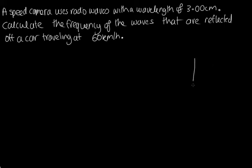Let's start by drawing a diagram. Here's our speed camera and here's our car travelling away from the speed camera. Now what we're actually going to have to do is we're going to need to break this problem into two parts.